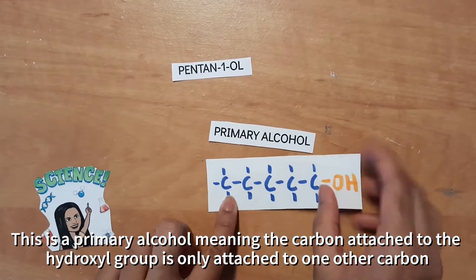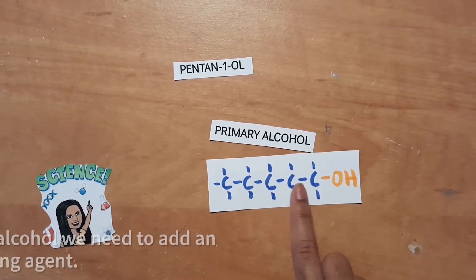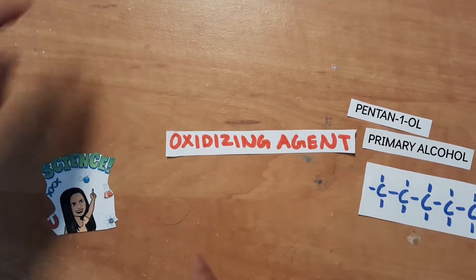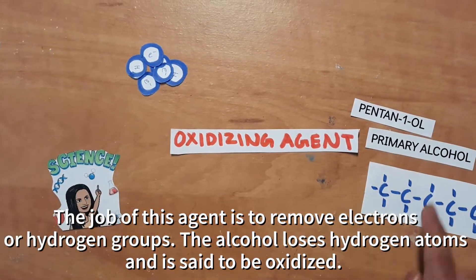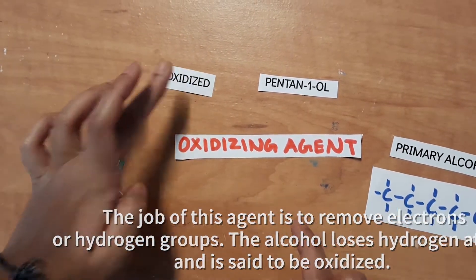meaning the carbon that's attached to the hydroxyl group is only attached to one other carbon. In order to oxidize this alcohol, we need to add in an oxidizing agent. The job of this oxidizing agent is to remove electrons or hydrogen groups. The alcohol loses hydrogen groups and is said to be oxidized.